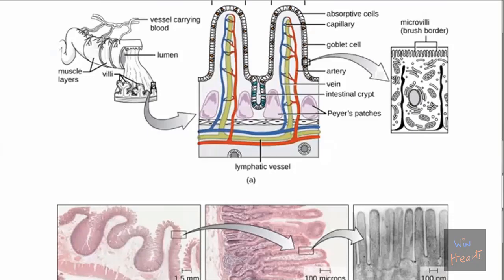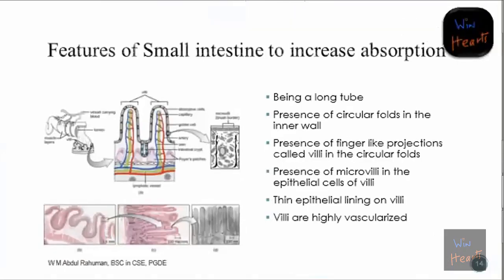You can also see actual pictures taken from a microscope. Let's go through the features available. The small intestine is a long tube - seven meters in length. The inner wall has circular folds, so the inner wall is longer than the outer wall, giving it more surface area. On top of that we have finger-like projections called villi, and on top of the villi we have microvilli.